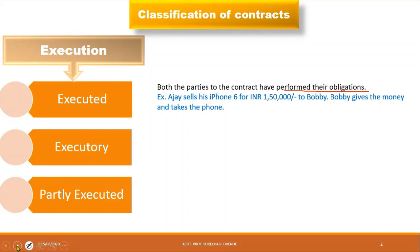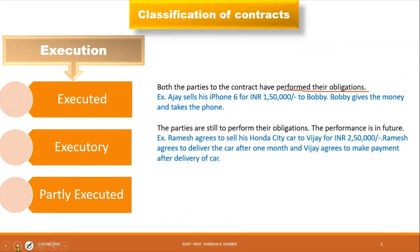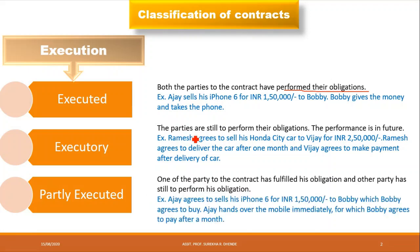Next is executory. Executory means performance is still pending. Both parties have entered into an agreement or contract, but their performance is yet to happen. They will complete performance in the future. The parties are still to perform their obligations.